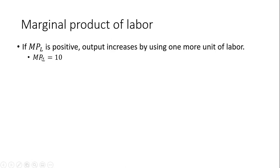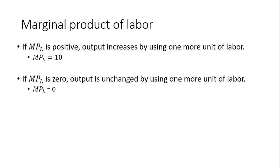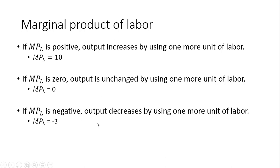If the marginal product of labor is positive, output increases by using one more unit of labor — for example, output would go up by 10. If the marginal product is zero, using one more unit of labor leaves total output unchanged; that worker does not add to the production process. If the marginal product of labor is negative, hiring a worker would actually cause output to fall — for example, our output could fall by 3 units, going from 10 to 7.